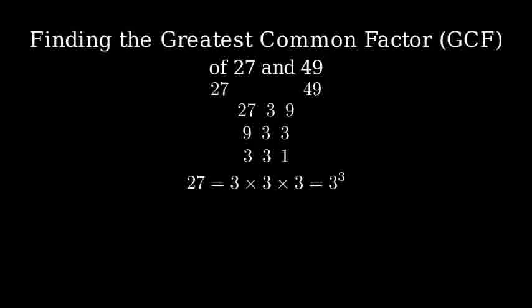Now let's factor 49. 49 divided by 7 equals 7. And 7 divided by 7 equals 1. So 49 equals 7 squared.